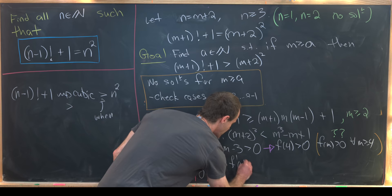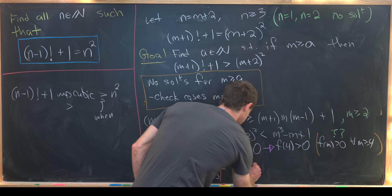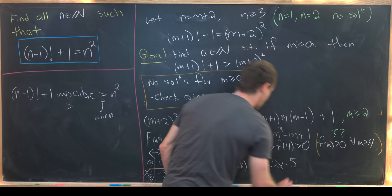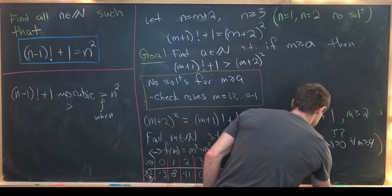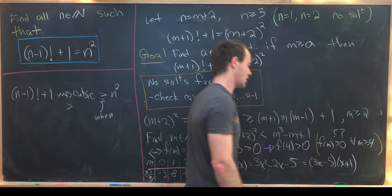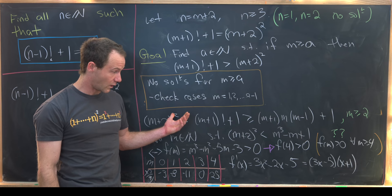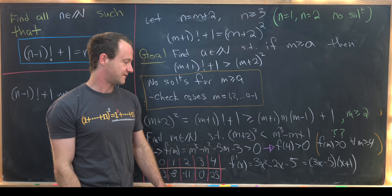So let's calculate f prime of x. So I've replaced m with x so it's like a continuous variable. Notice that that's going to be 3x squared minus 2x minus 5. We can go ahead and factor that and see that that is 3x minus 5 times x plus 1.